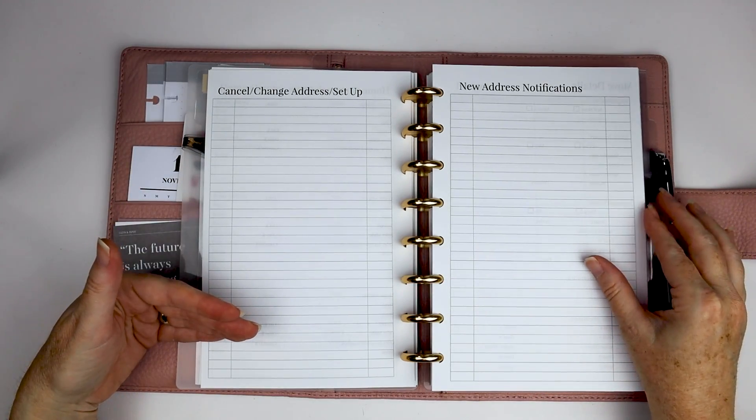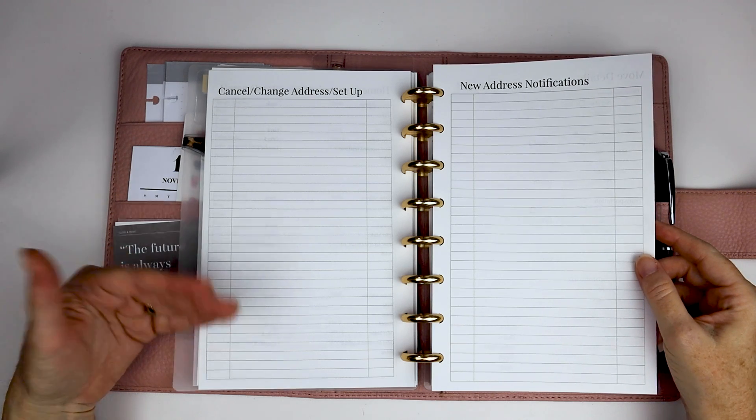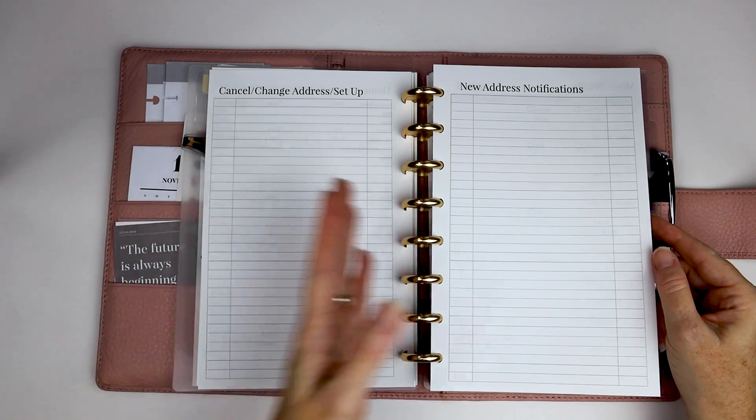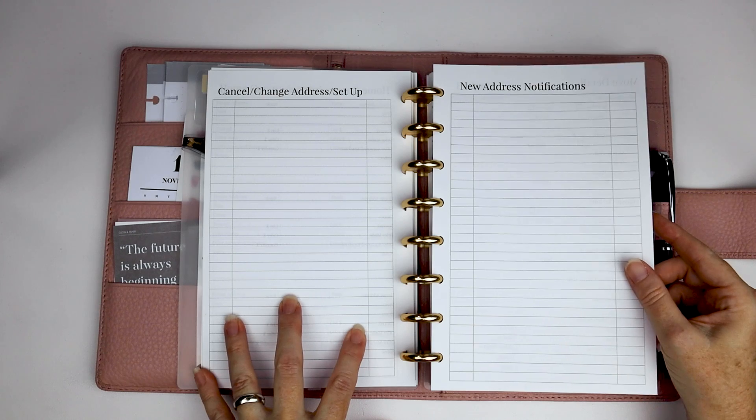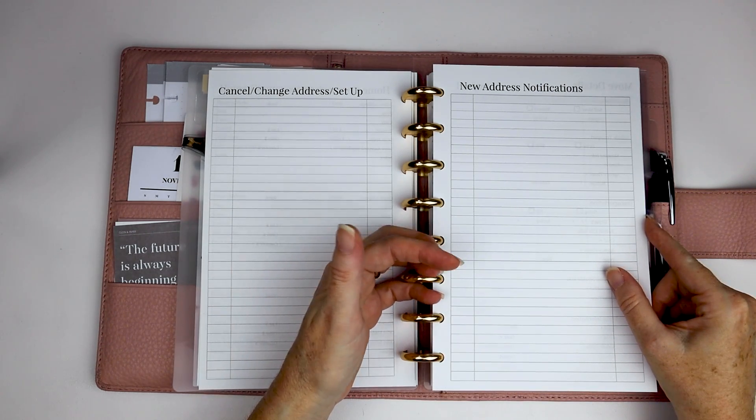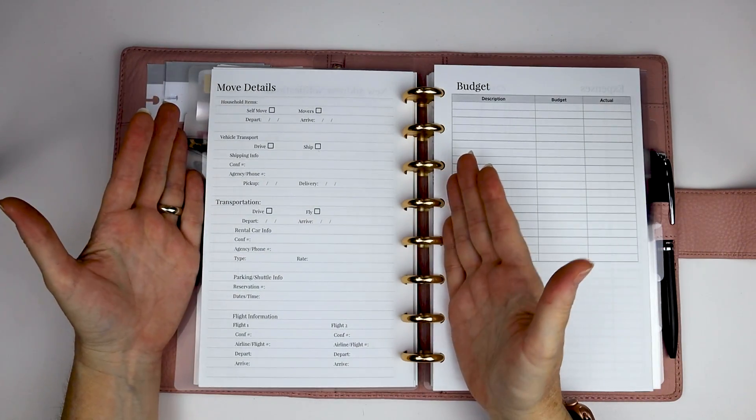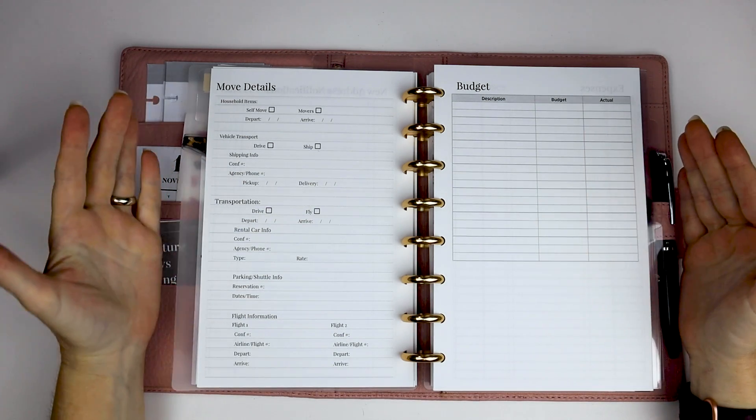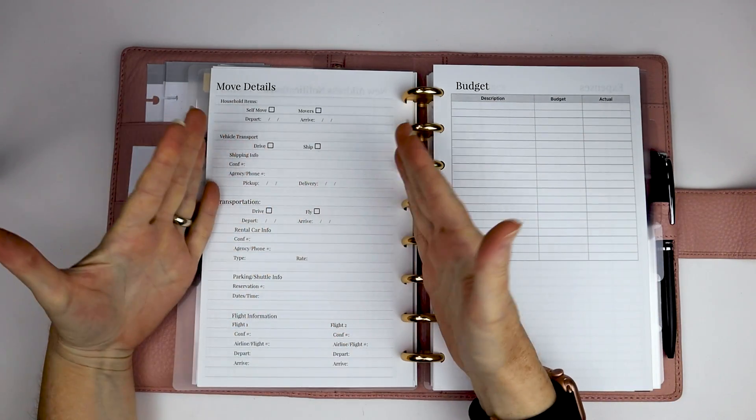A list of, or a spot to list all the places that you need to change your address or cancel or set up. So it's kind of a spot to take, you know, I need to cancel utilities here, set them up over here. This is something I need to keep, but I just need to change the address. There's a spot for all of that. New address notifications. So kind of a spot to list all of your friends and family that you want to send your new address to. There's a spot for move details.